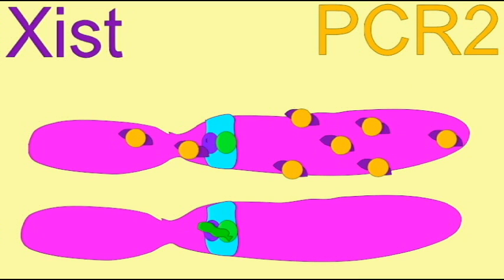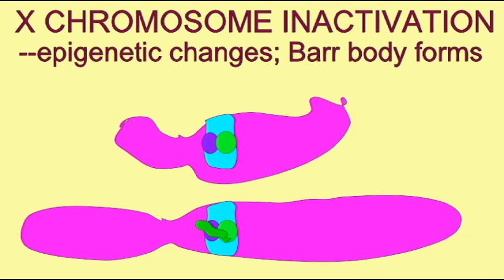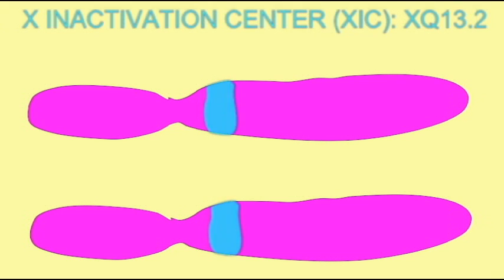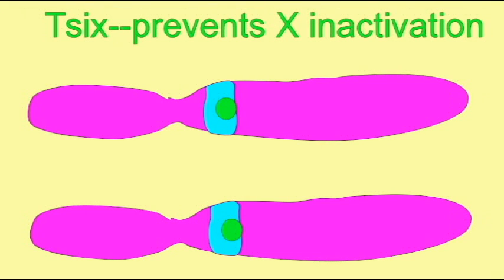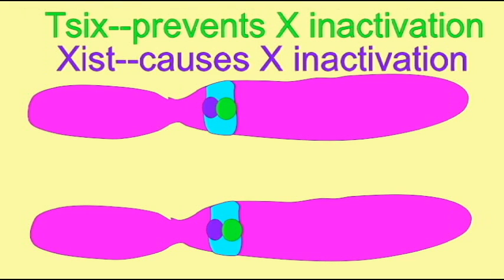The only site which is required for pairing is the Xic site, which contains both the Xist and Tsix genes. If this X chromosome pairing does not occur, as a result of either mutated genes or specific drugs, embryos can be formed with two activated X chromosomes or two inactivated X chromosomes. Both of these conditions are lethal.